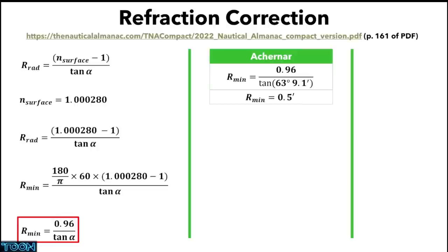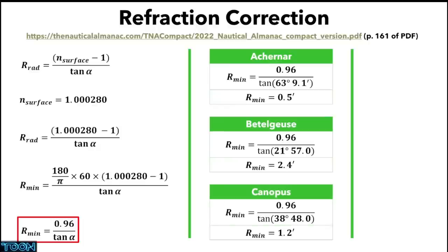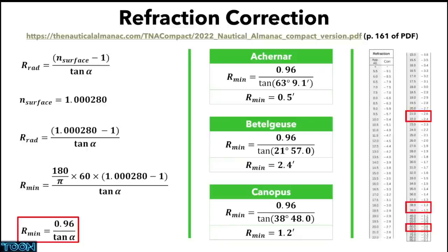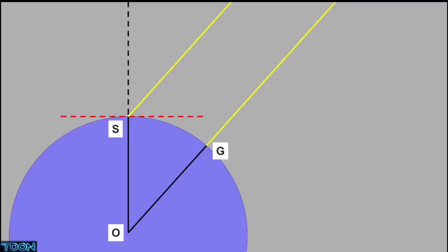For Achenar, the refraction correction is half an arc minute; for Betelgeuse, 2.4 arc minutes; and for Canopus, 1.2 arc minutes — matching values given in the almanac. Achenar was at 63 degrees, Betelgeuse at 22 degrees, Canopus at 39 degrees. With all corrections applied — index error, dip, and refraction — we add them to the measured angles to get the true elevation or true altitude.